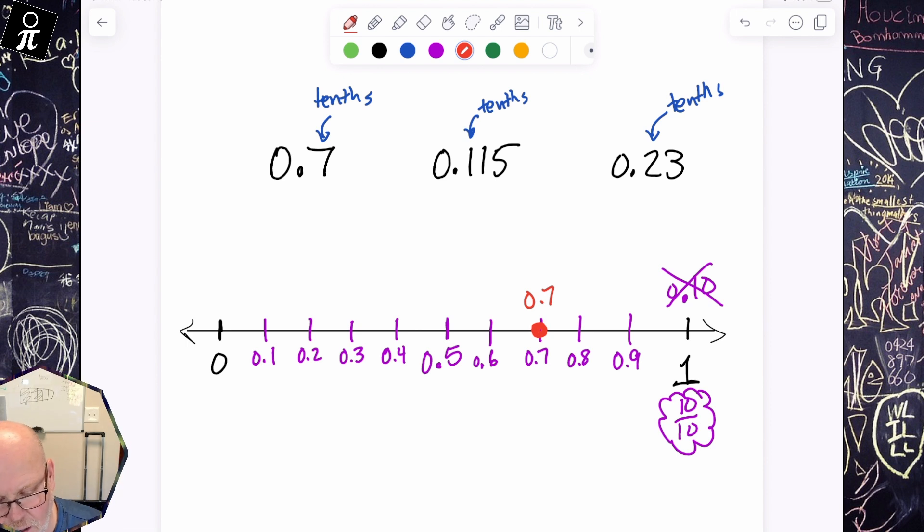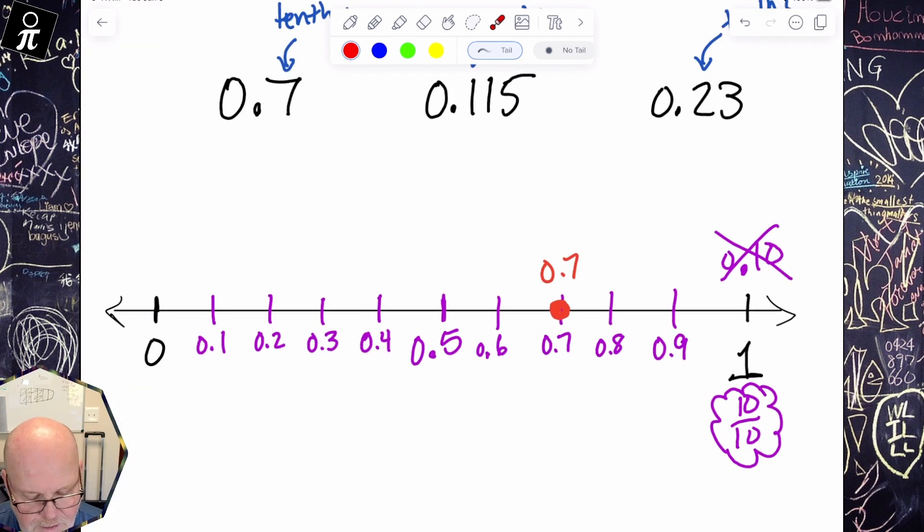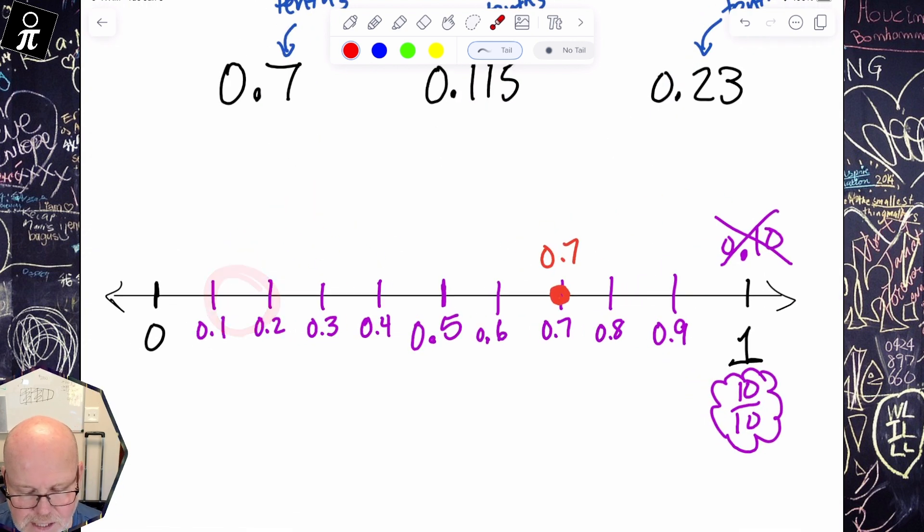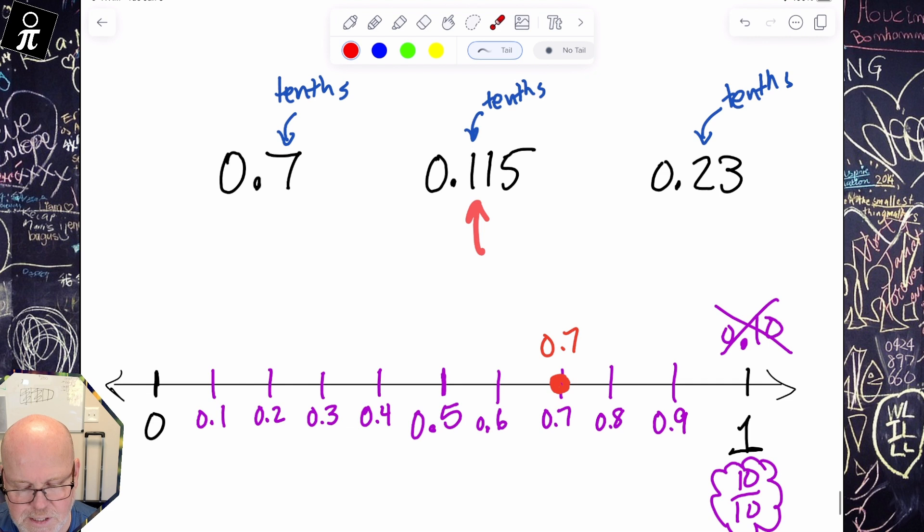So now if we're going to take care of this 0.115, we know that it lives in the neighborhood of the one-tenths right here. And how do we know that? Because we can see that that first decimal place is one-tenth. So it lives somewhere in this neighborhood right here.